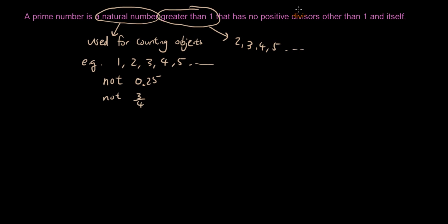That has no positive divisors. So what a divisor is, is basically, okay, so for example, if you have a number 10, 10 is equal to 2 times 5, right?